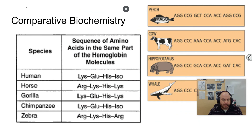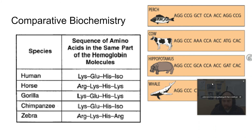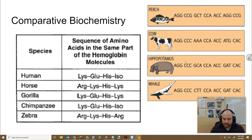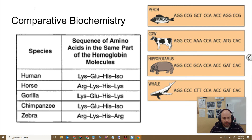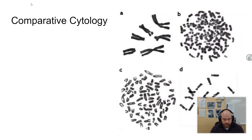There is comparative biochemistry, which looks at things like amino acids and DNA sequences. You can see that a gene has a very similar sequence, with slight differences further out, and there will be more similarities with things that are more closely related. This also applies to amino acid sequences in a hemoglobin molecule. You could also talk about comparative cytology, which deals with cells — not only cell shape and structure, but also the numbers and shapes of chromosomes in an organism's cells.